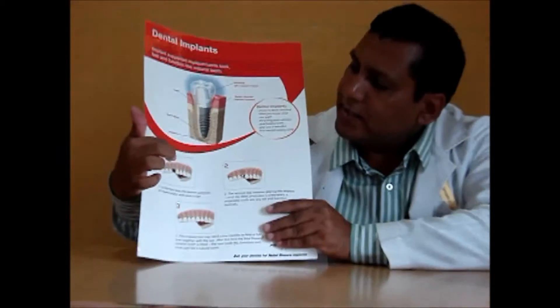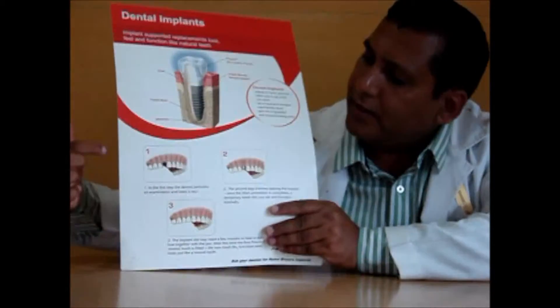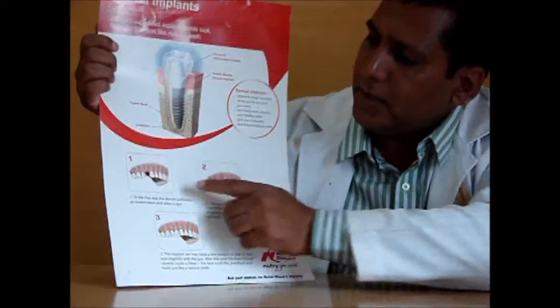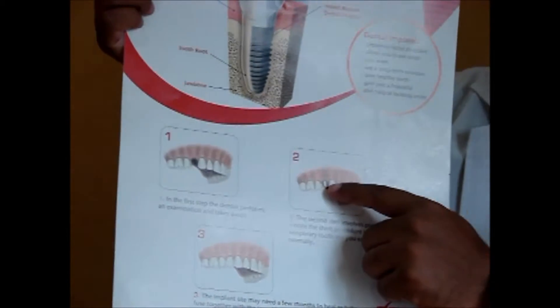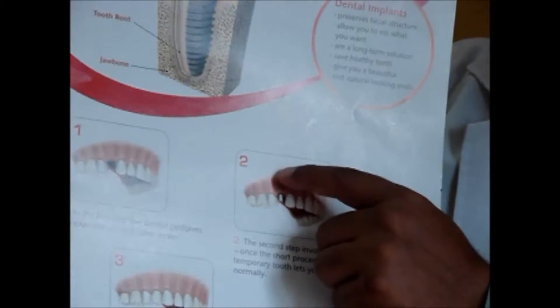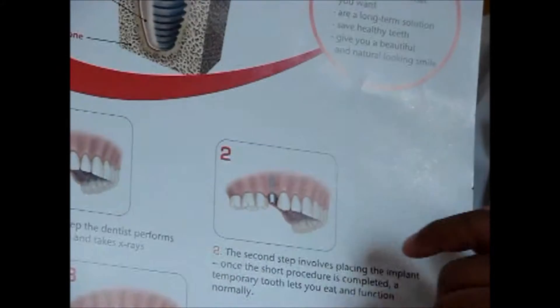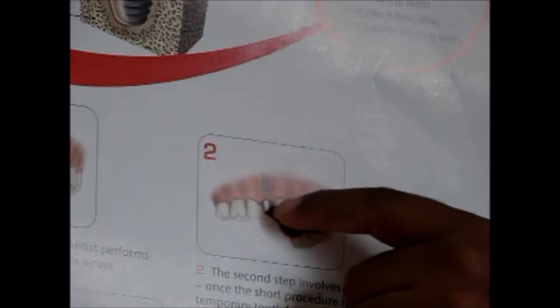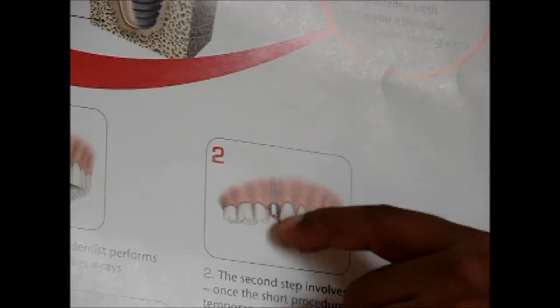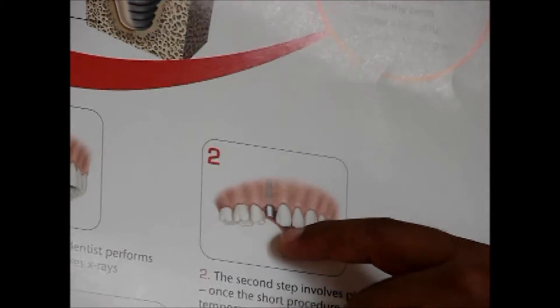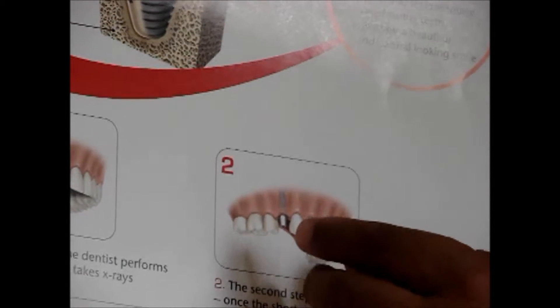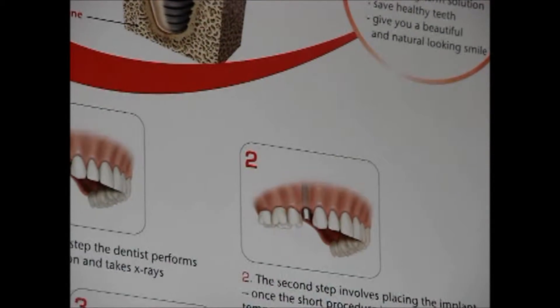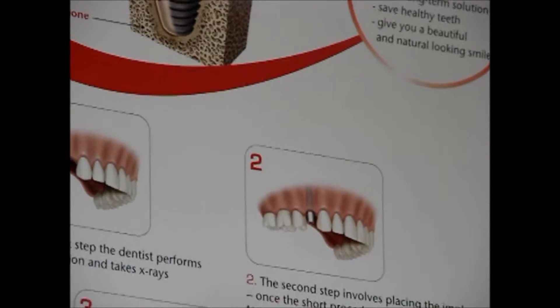You can see here there is an empty socket present. This represents an implant which has been placed inside the socket, and there is an extension of the implant outside which is known as the abutment. Over this abutment, the cap is placed.